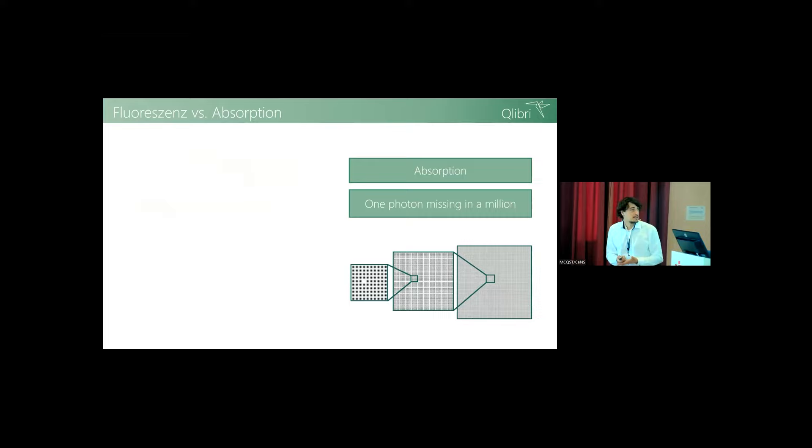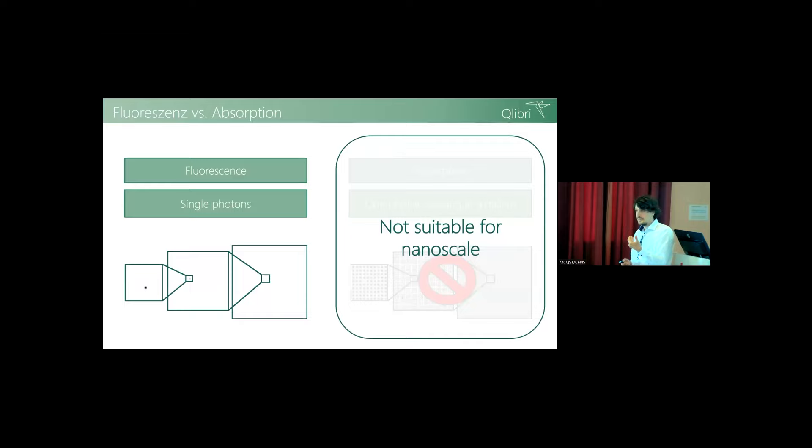At the nanoscale level, you have to detect one photon missing in a million photons. The absorption cross-section is a million dots and you have to detect this one dot missing. This is really challenging and basically most times impossible due to shot noise limits. If you want to detect with that sensitivity, you have to integrate for really long times and then you run into other troubles.